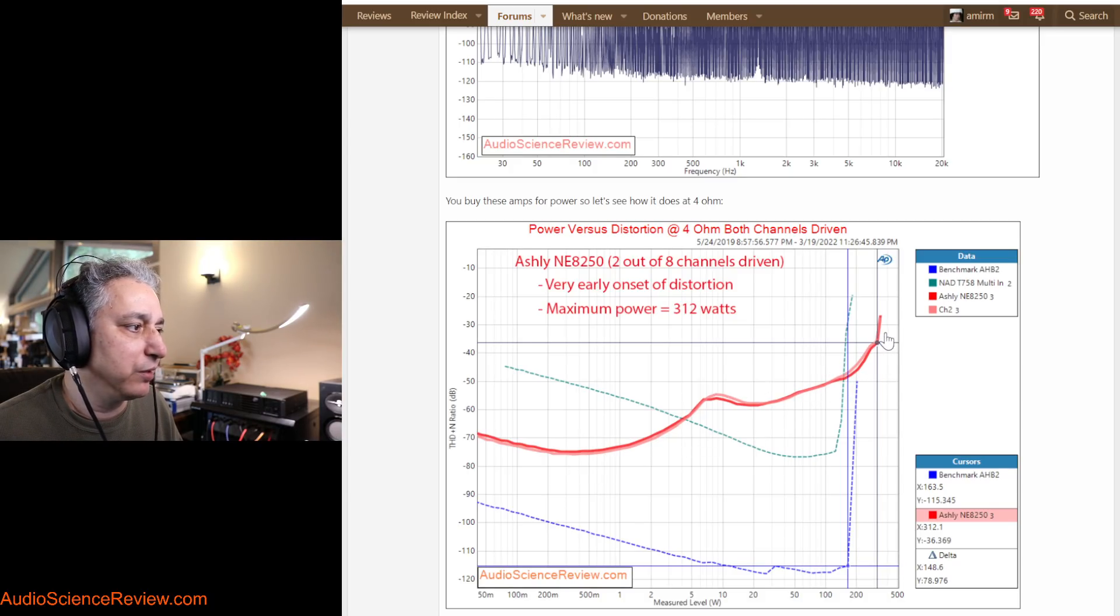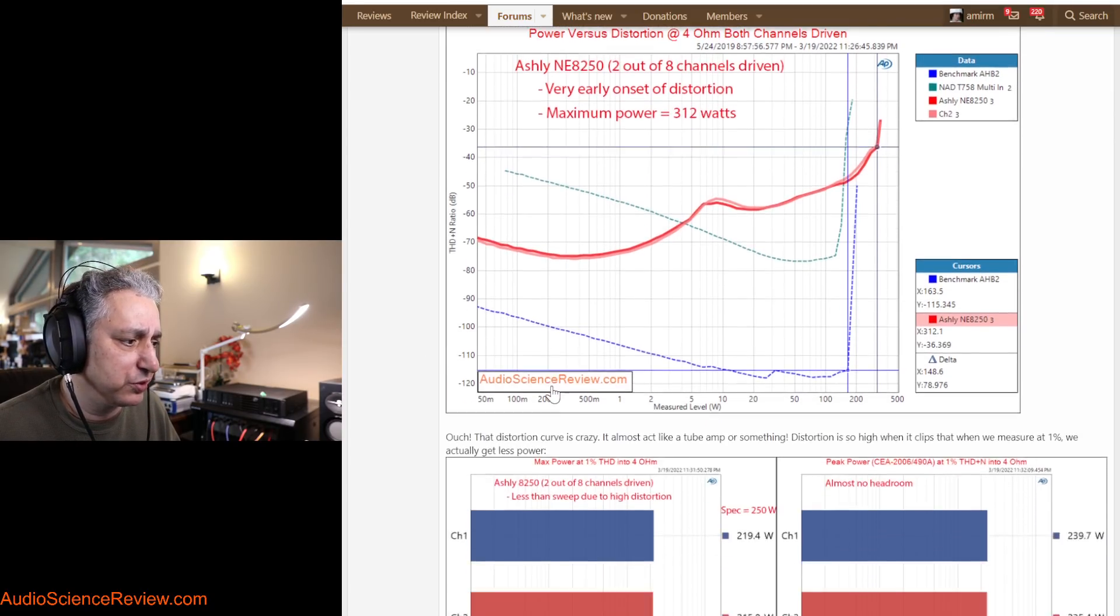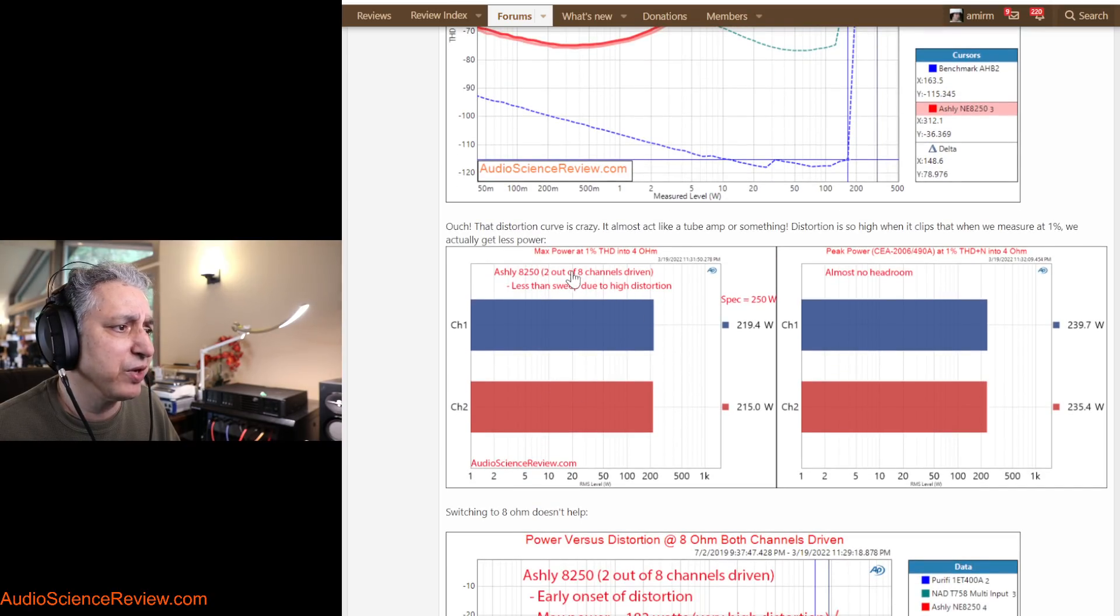At some point it really clips and that's about 312 watts, but that's very high distortion. It's so high that when I measure that just 1% distortion, we actually get less power. Usually this is the other way around. So spec is 250. We're getting 220. Good enough.